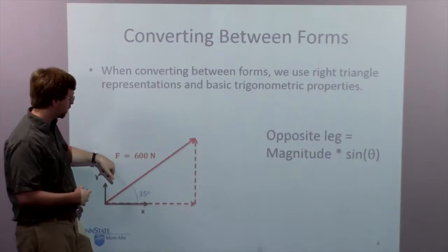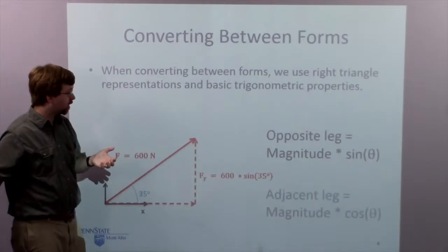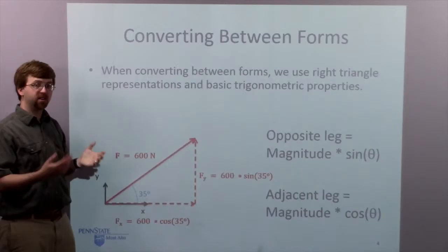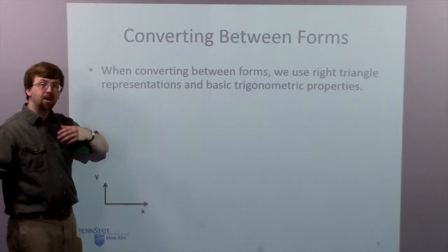The opposite leg is the hypotenuse times sine theta, and that gives me the y-component of my vector. If I do the cosine, that gives me the adjacent side, which is the x-component of the vector. It's important to keep track of what is the opposite leg and what is the adjacent leg — we'll talk more about that later.